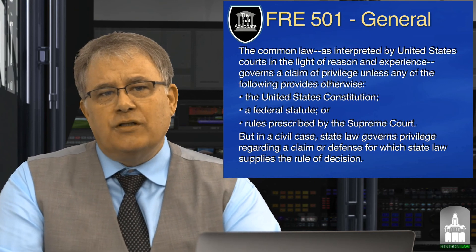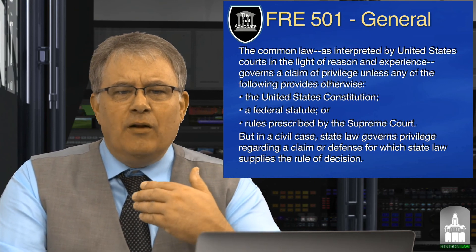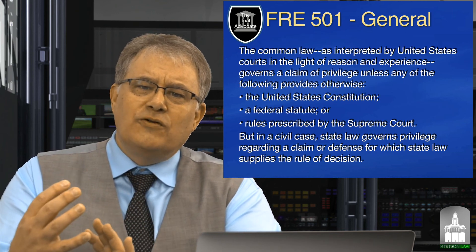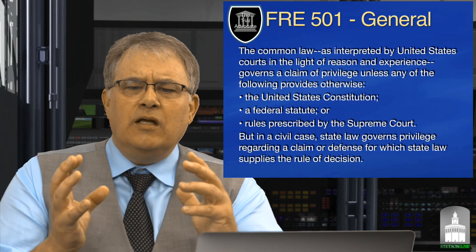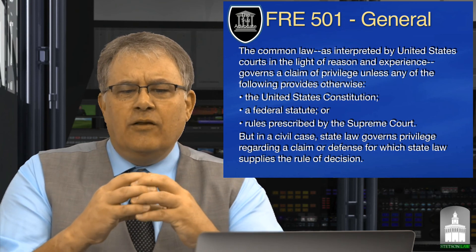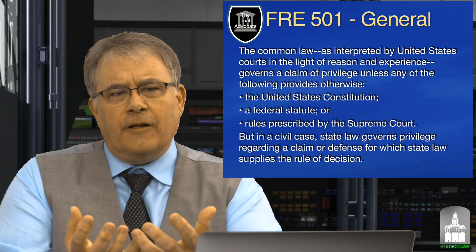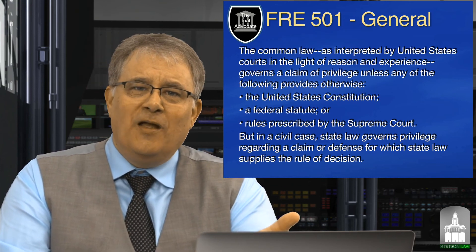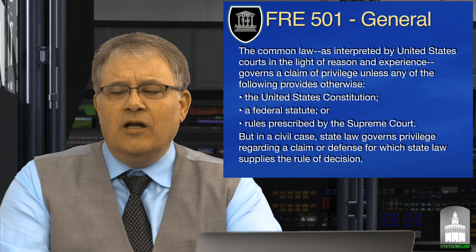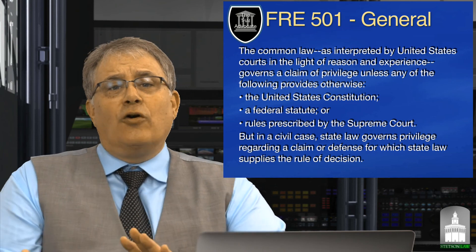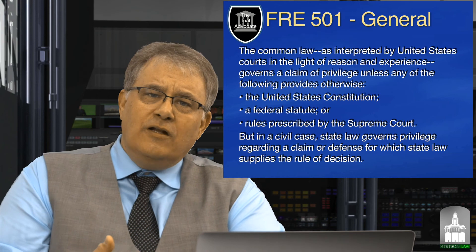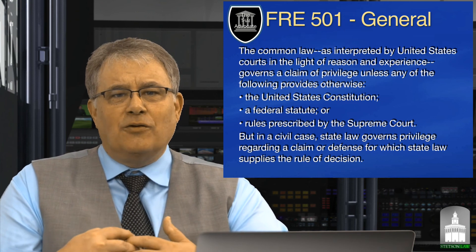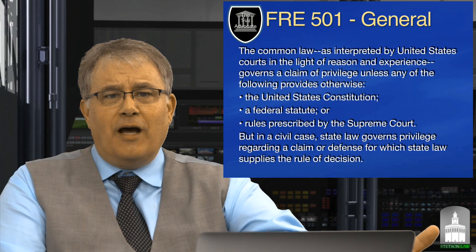If we step back and think about privileges conceptually, the federal rules of evidence are kind of a one-off — they don't actually capture the application of privilege in most states. They're an anomaly. Why? Because when the Federal Rules of Evidence were first passed, there was Watergate going on and a pending issue of executive privilege. Congress did not want to inadvertently create protections for any individuals involved in the Watergate scandal.